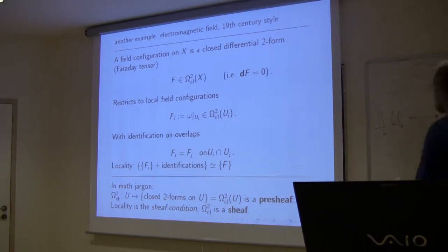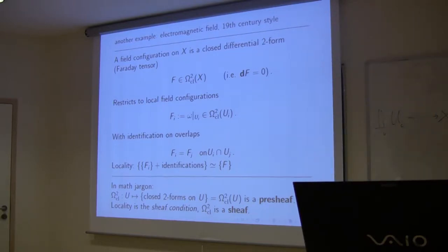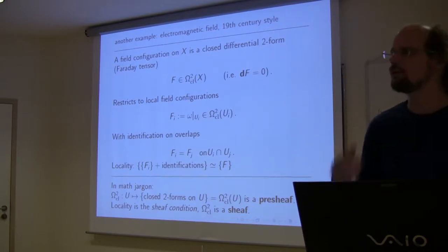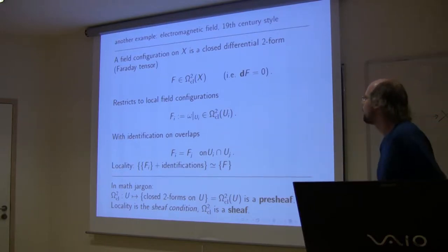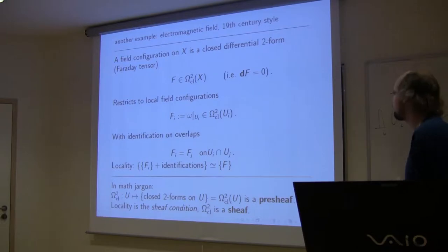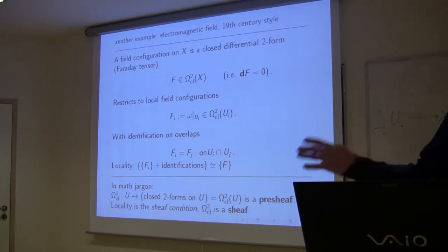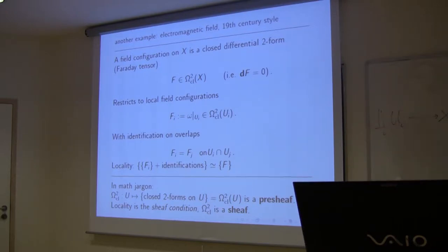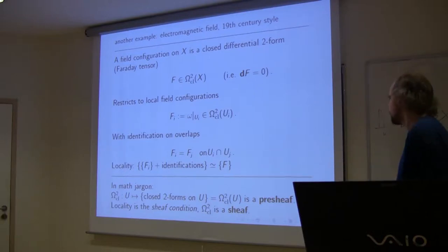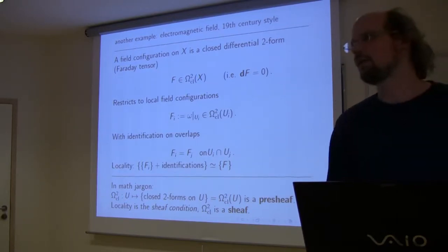Maxwell explained in the 19th century that the electromagnetic field is local in a very similar way. In modern language, the electromagnetic field strength — encoded in what's known as the Faraday tensor — is just a closed differential 2-form F on our spacetime. Just as before with scalar fields, now instead of a real function we have a 2-form. We may restrict such a 2-form to each patch to get local 2-forms, and on double overlaps they will be identified. The locality principle says that a bunch of local 2-forms equipped with identifications where their supports intersect are equivalent to the globally defined 2-forms. In math jargon, we have the sheaf of closed 2-forms — starting as a pre-sheaf, with the gluing condition being the sheaf condition. Dirac noticed in the 1930s this is not the end of the story — there's more going on.